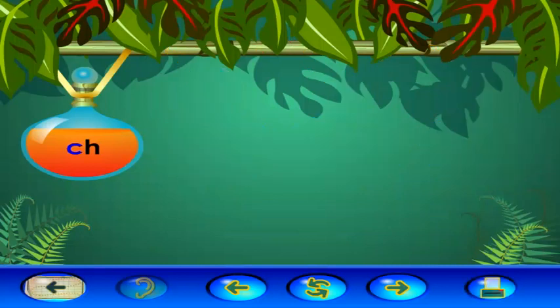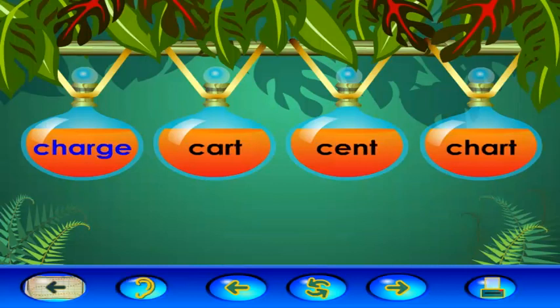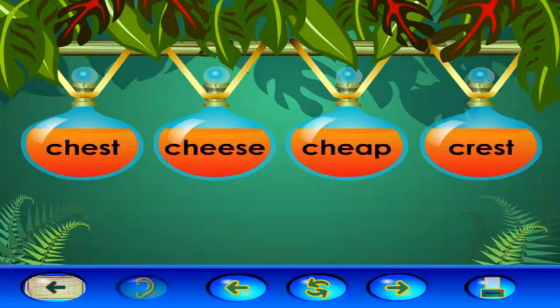Together, the letters C and H make the sound CH, like in the word chip. Let's practice finding words with the sound CH. Click the word chase. Chase. Chain. Bravo! Click the word chest. Chest. Super!